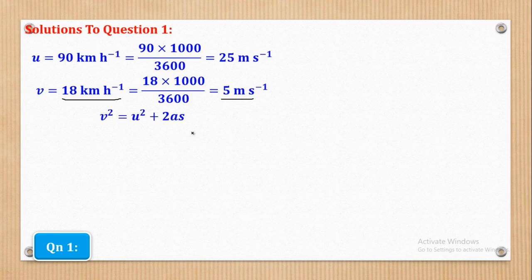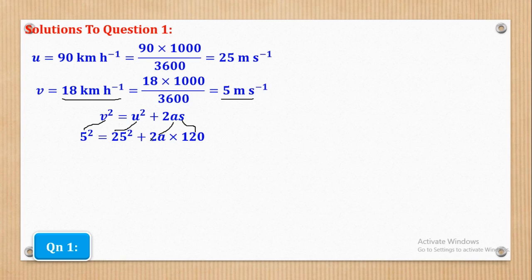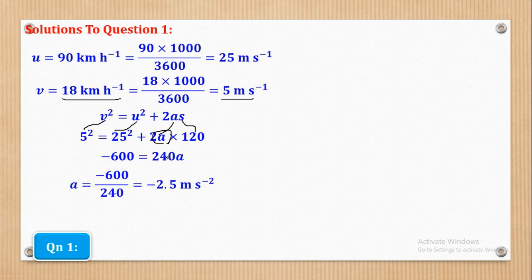From there we shall use the third equation of motion: V² = U² + 2AS. When I substitute V = 5, U = 25, and S = 120 meters, I have only one unknown which is A. When I make A the subject, I come up with A being equal to negative 2.5 meters per second squared. So we have now found the acceleration, which is −2.5 m/s².